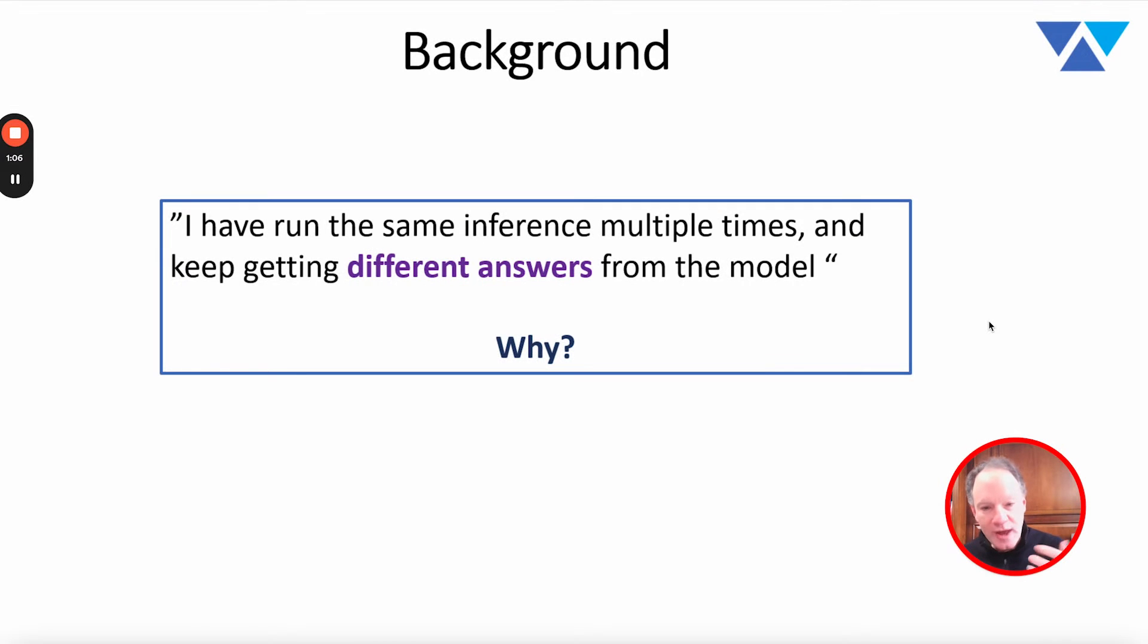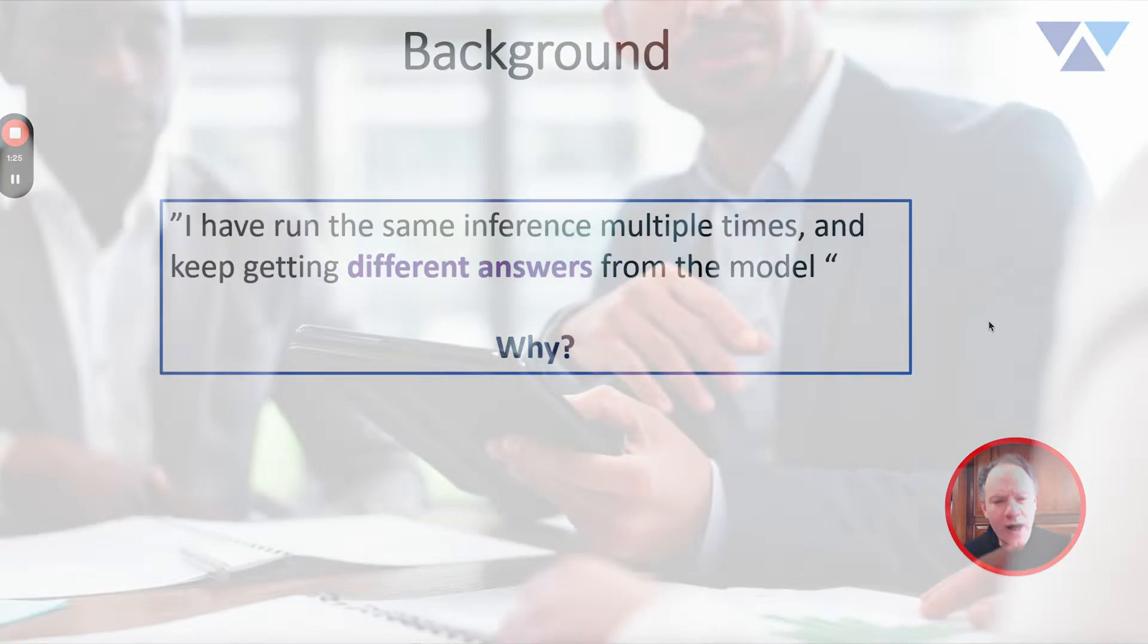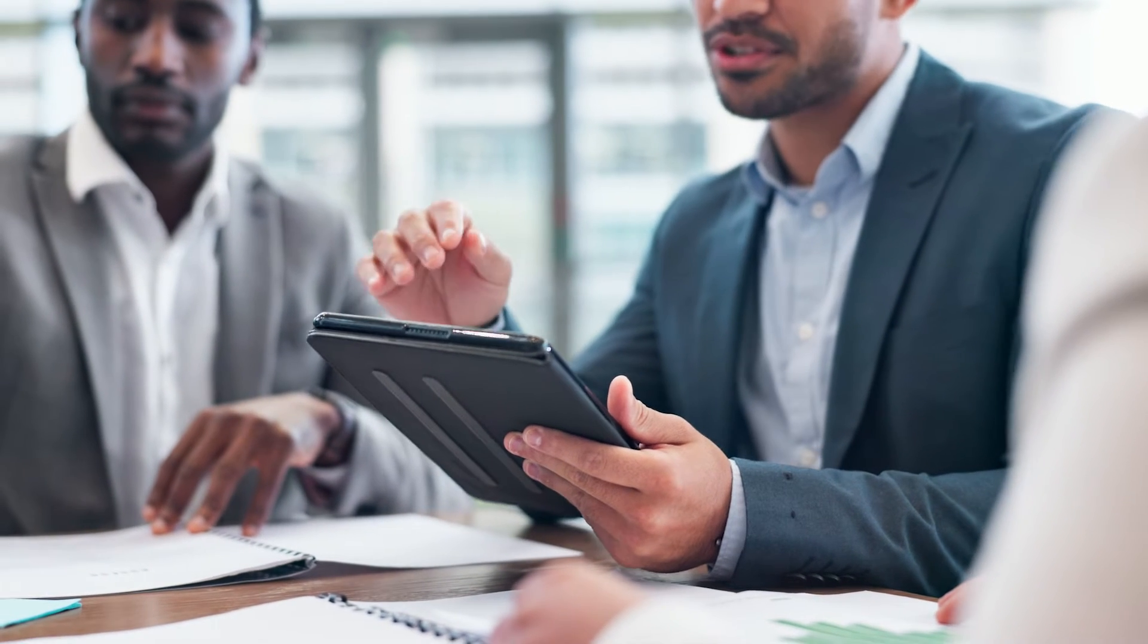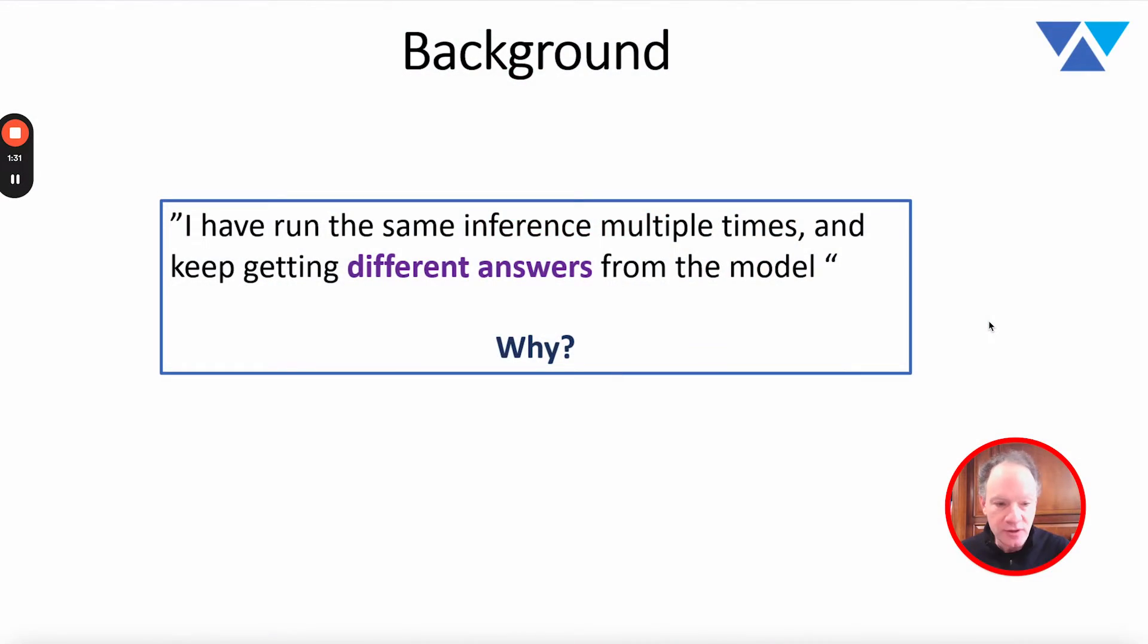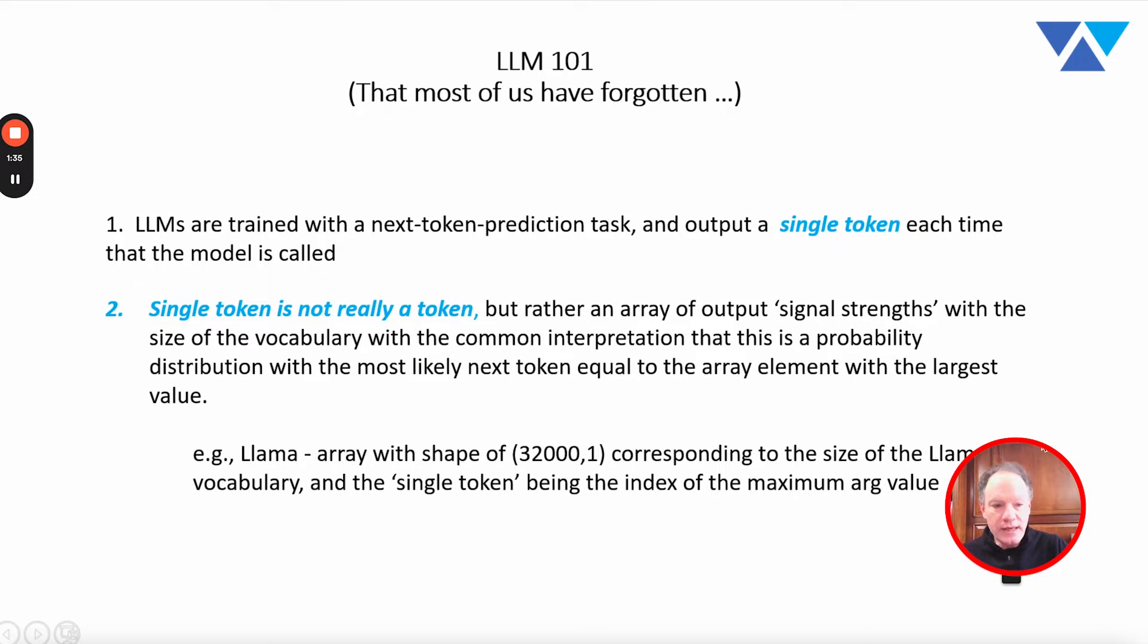At first when we heard this, we went back to this user and our first answer is, well, you do know there is a stochastic element to the way that the models generate output. Anytime you use a fancy-sounding word like stochastic, you feel like you're giving a real explanation. But as we dug into this and started thinking about this, we started saying, well, why is that? And where exactly does this random element, this variability element, come into play with what an LLM is generating?